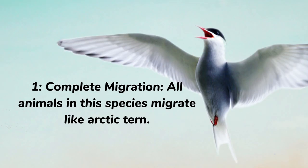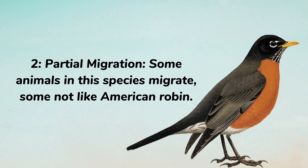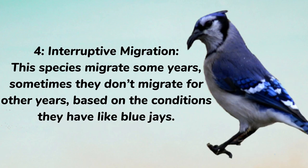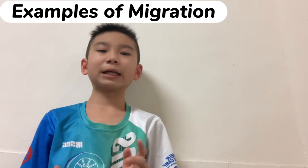One, complete migration — all animals in the species migrate, like the arctic tern. Two, partial migration — some animals in the species migrate and some don't, like the American robin. Three, differential migration — the species migrates differently for different groups, like different age or gender groups, like herring gulls. Four, irruptive migration — a species migrates some years but not in others, based on environmental conditions, like blue jays.